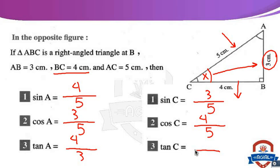Tan C equals opposite over adjacent. The adjacent of this angle gives tan C equals 3 over 4.